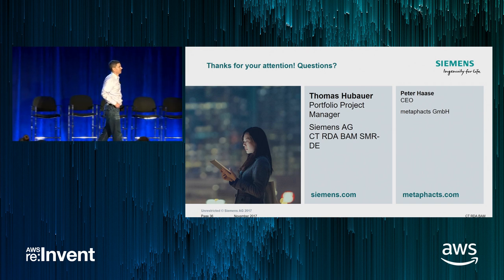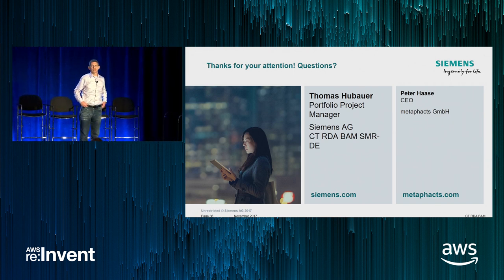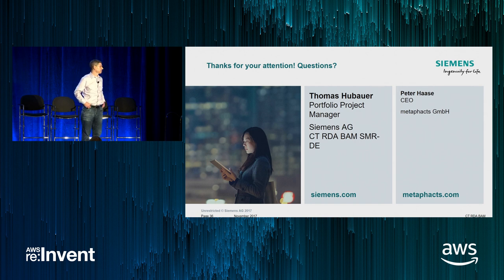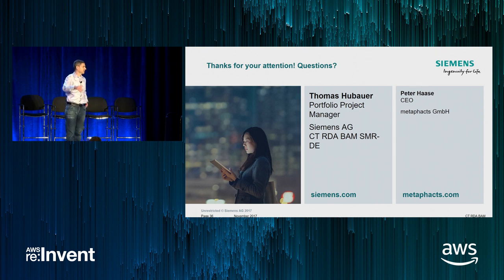Question: what's the pricing model? The pricing is published with the public preview. It's going to be instance-based, with additional charges for IOPS, storage, and backups. You can go to the Amazon Neptune product page and find all pricing details in the pricing tab.